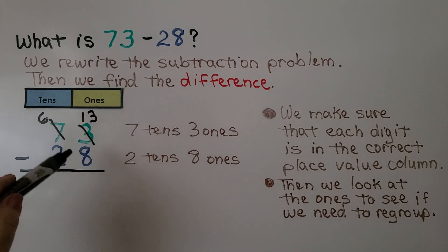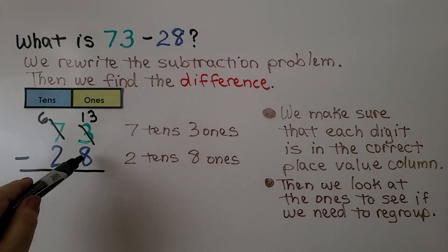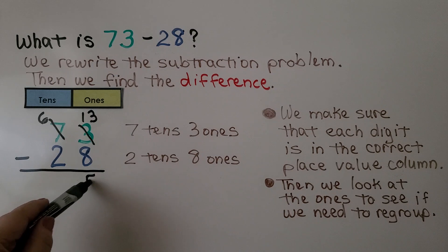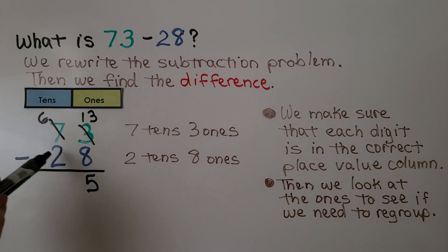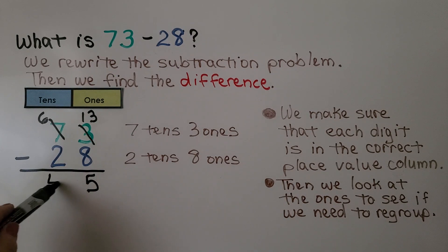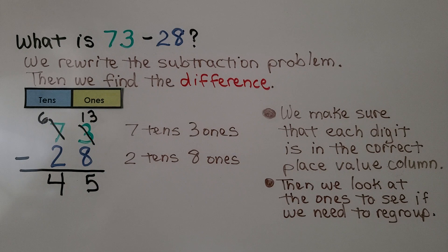Thirteen ones minus eight ones is five ones. Six tens minus two tens is four tens. It's equal to forty-five.